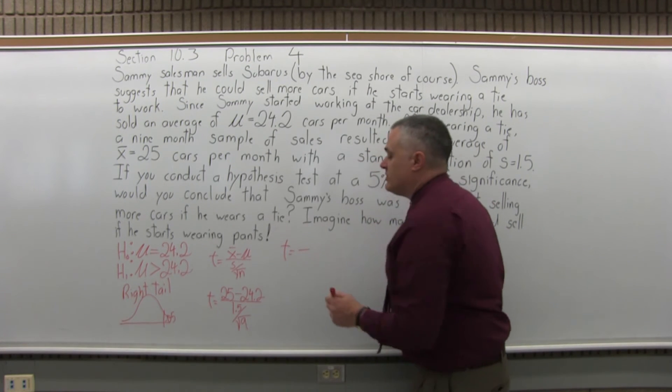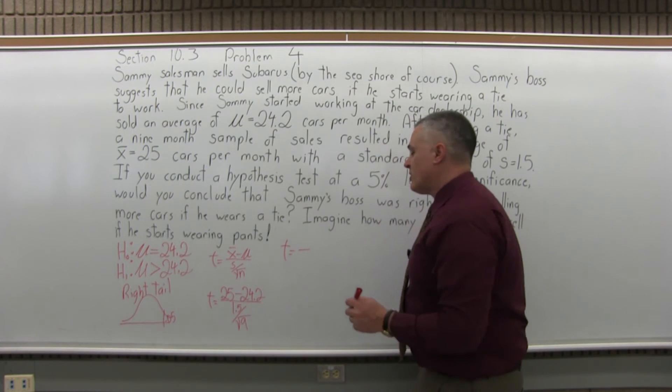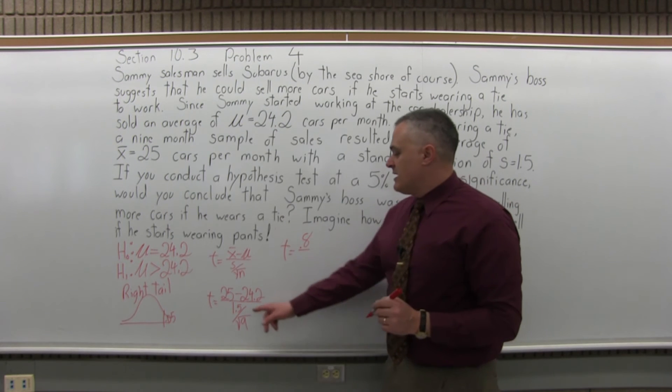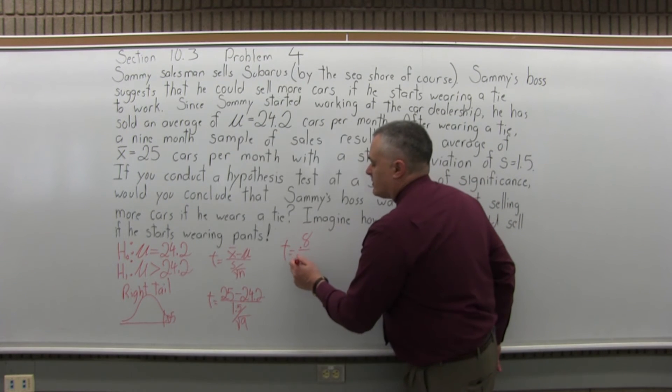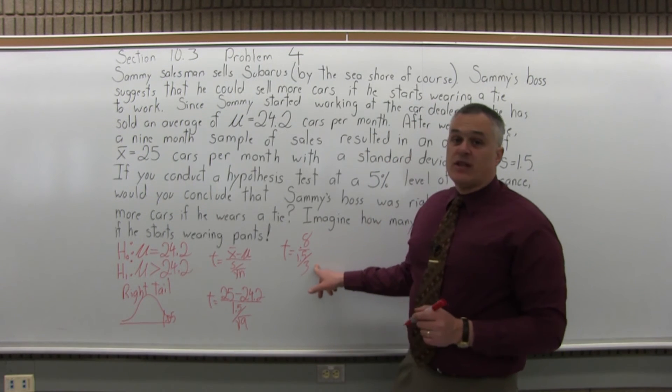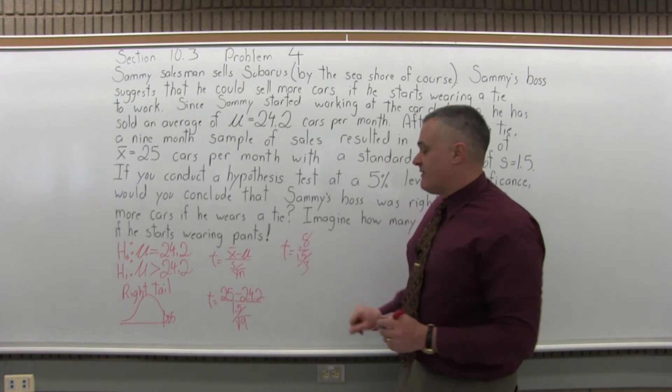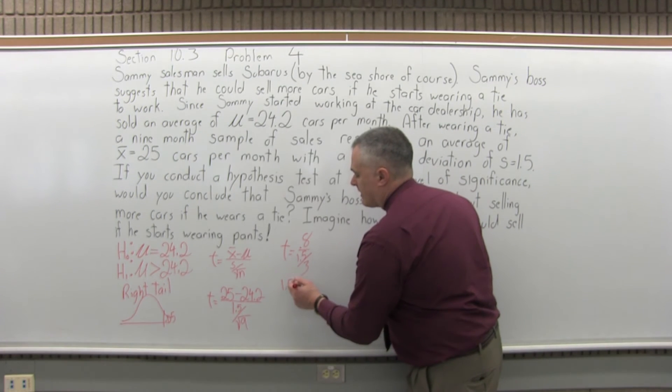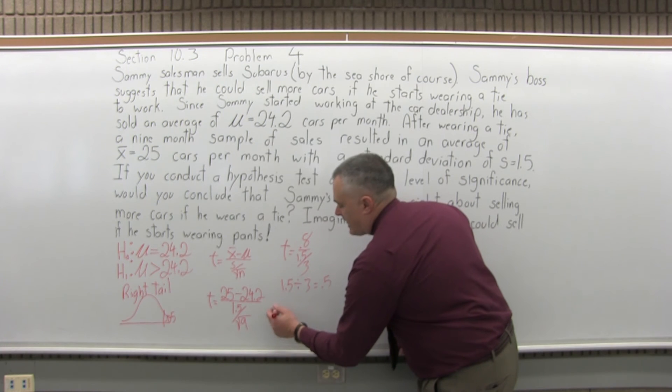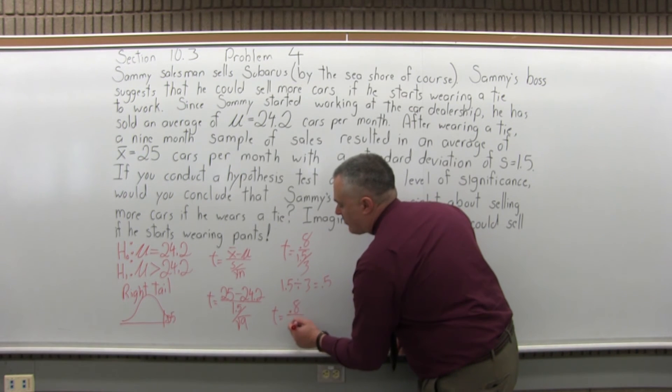I'll have T equals, in the numerator, 25 minus 24.2 will be positive 0.8. And in the denominator, 1.5 over square root of 9 will become 1.5 over 3. Square root of 9 is 3, of course. Now I can simplify the denominator a little bit. 1.5 divided by 3, I know it's 0.5. If you don't, run it through your calculator. And now the computation becomes T equals 0.8 divided by 0.5.